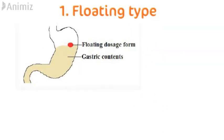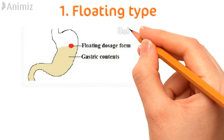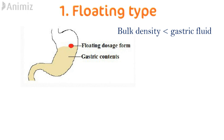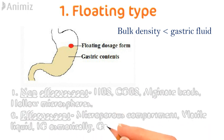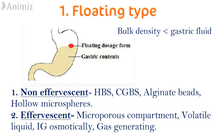The first type is the floating system. In these systems, the dosage form has a bulk density less than that of gastric fluid so that it can remain buoyant over the gastric fluid. They are divided into non-effervescent systems — such as hydrodynamically balanced systems, colloidal gel barrier systems, alginate beads, and hollow microspheres — and effervescent systems — such as microporous compartment, volatile liquid containing systems, intragastric osmotically active systems, and gas generating systems.